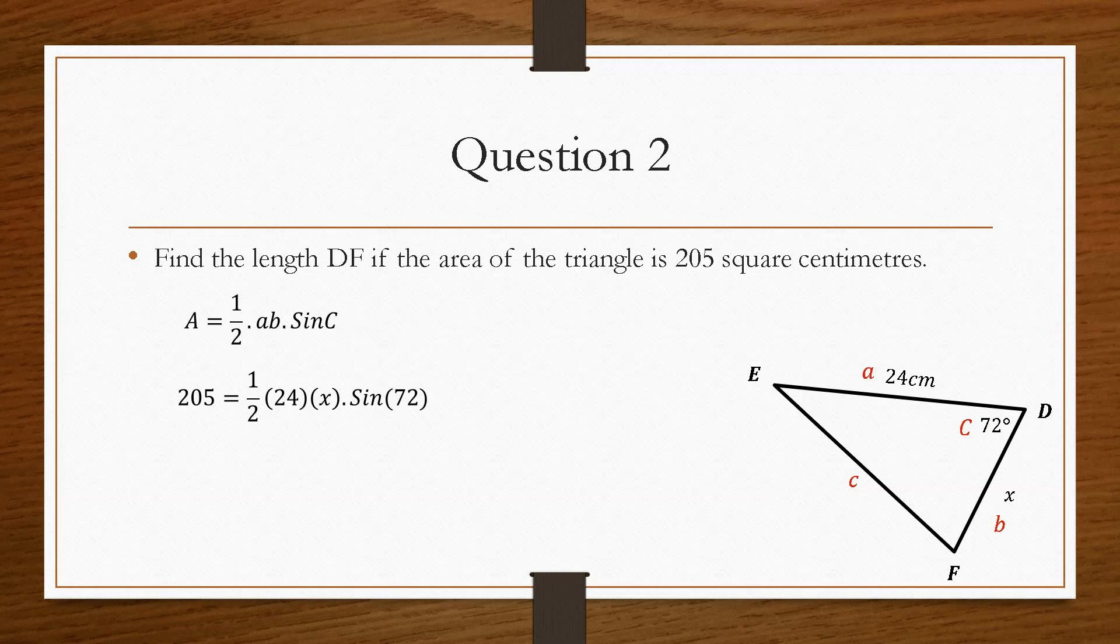When we have this plugged in, it's just a case of rearranging and changing the subject of the formula for x. So 24 times a half is 12, multiplied by x times sine 72. There are lots of different ways you can do this. You can completely simplify the right-hand side and then bring it over, or bring it all over and work it out using the calculator.